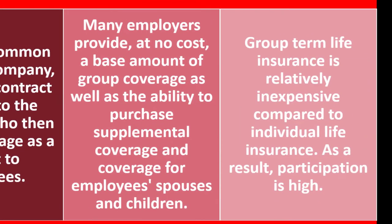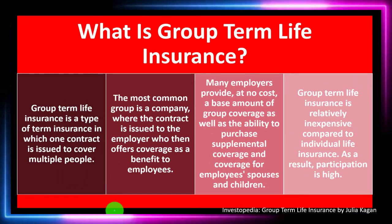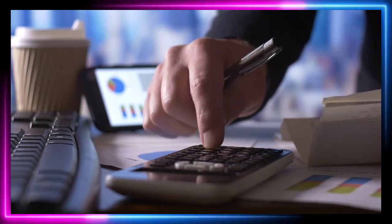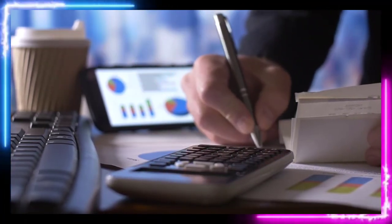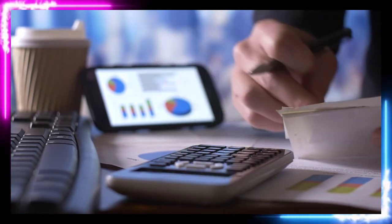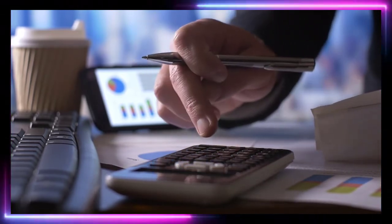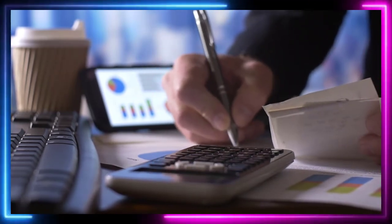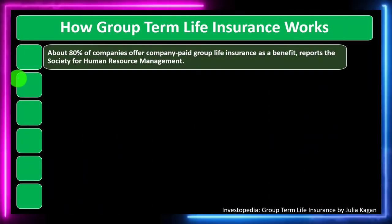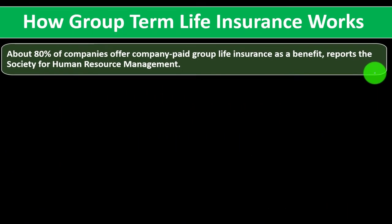Group term life insurance is relatively inexpensive compared to individual life insurance, and as a result, participation is high. If you have a group type of policy, you may get a benefit due to the group nature's impact on the actuarial calculation, possibly lowering risk to the insurance company — something that might be provided by an employer.